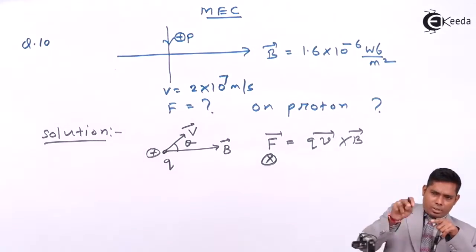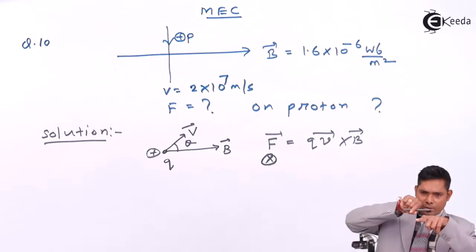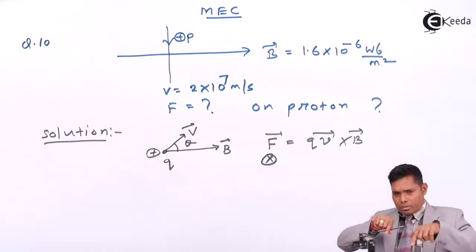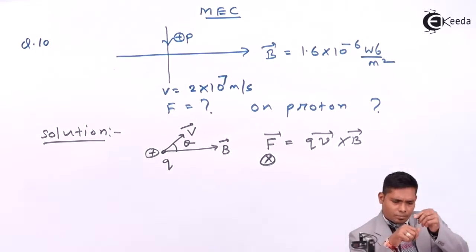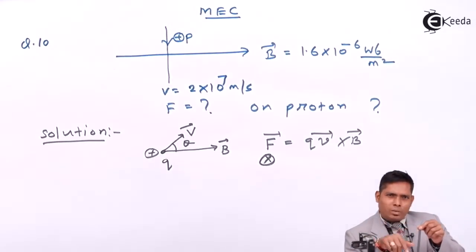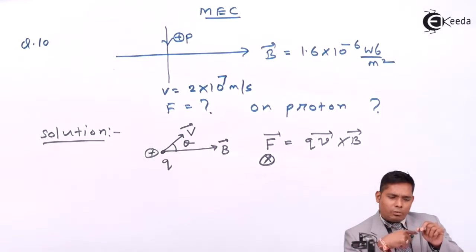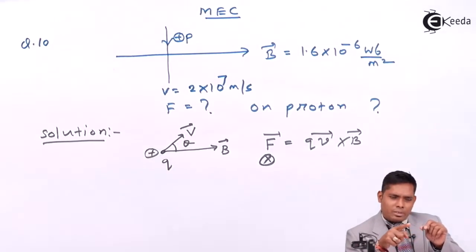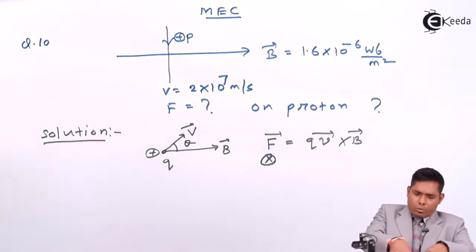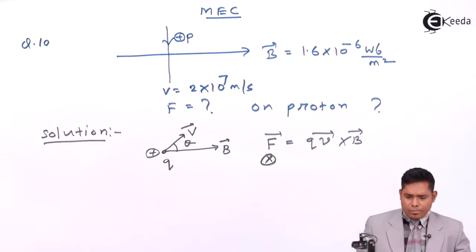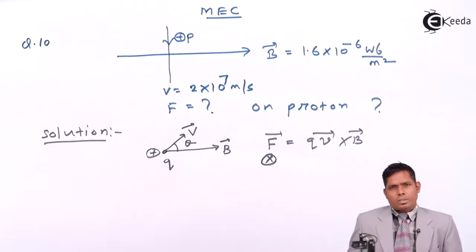If I project a charge in one direction and the magnetic field is perpendicular, the force will be directed inward. The magnetic field has the property that it will cause the charge to circulate. The magnetic field cannot increase the kinetic energy of the charge particle; it will only change the direction. The charge particle projected in this way will move in a circular path, with the force always directed toward the center of the circular motion.